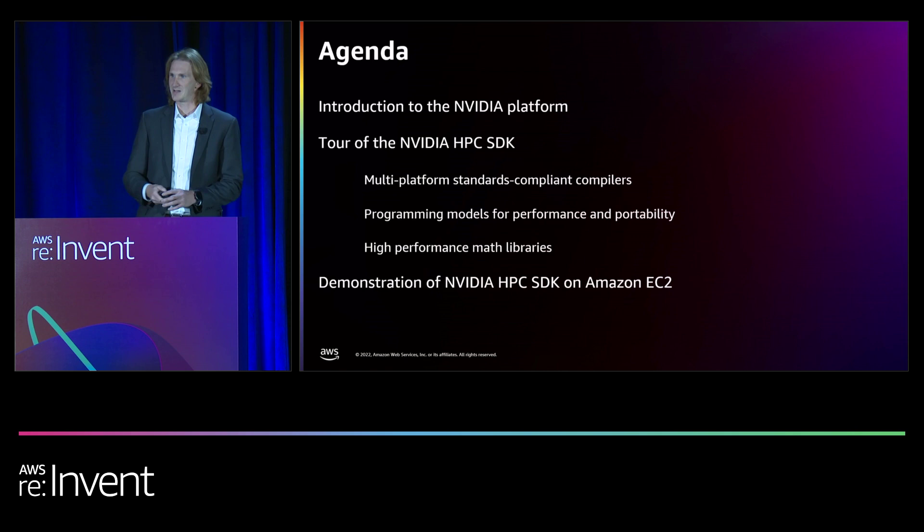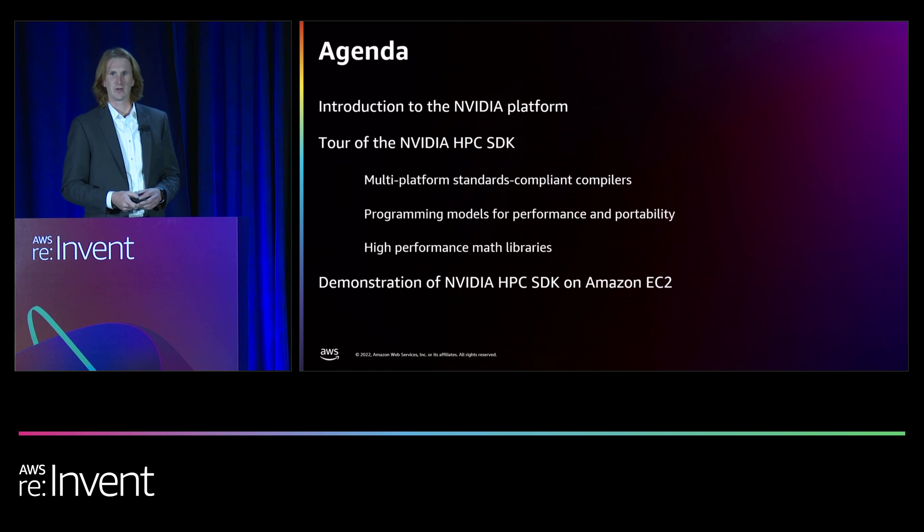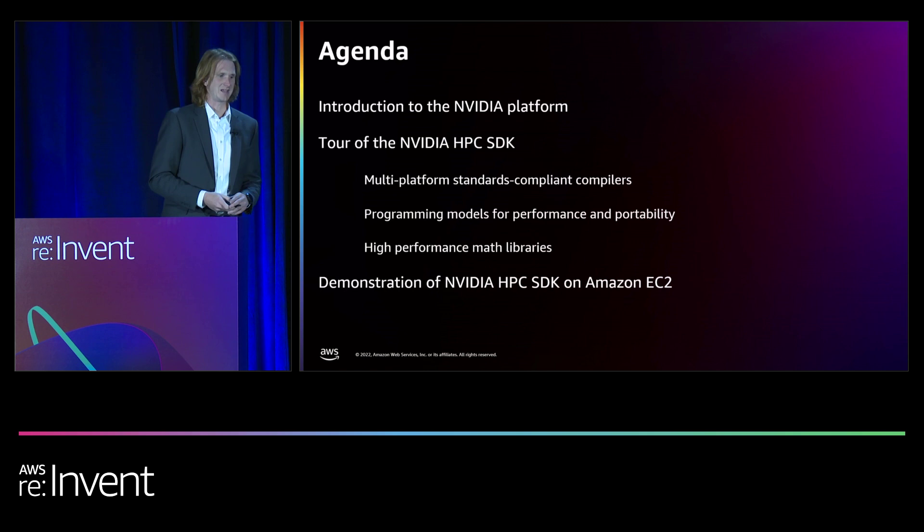The HPC SDK is really appropriate for AWS because it unlocks a lot of different instance types for your application. The SDK includes very powerful, performance standards-compliant compilers, and it enables programming models that facilitate both performance and portability across different hardware types. I'll also take you on a brief tour of the high-performance math libraries and give you a demonstration of this actually running on EC2 — it's canned but these are real results.